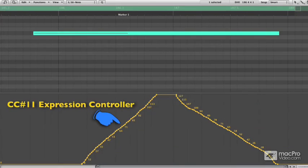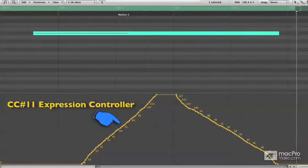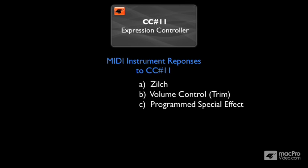As you could hear, the sound got louder and brighter as the CC11 values increased, and then it got duller and softer as the values decreased. However, this kind of response to CC11 messages is not built in to most instruments. When a program does respond in this way, it's only because it's been specially programmed to respond that way. And for those instruments that do respond to CC11 messages as simply a volume control, you won't find that the volume changes made with CC11 are any more or less expressive than volume changes made with CC7 messages.